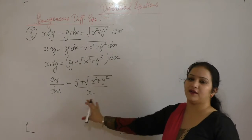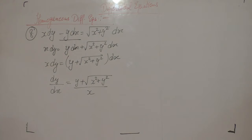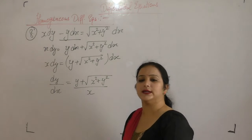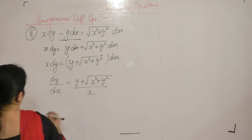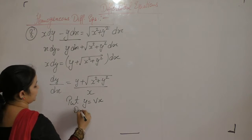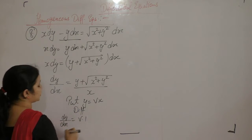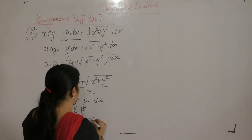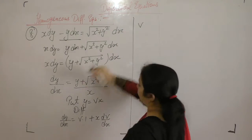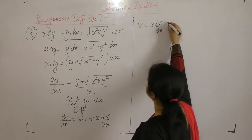We check the degree of the equation — it is degree 1 in both numerator and denominator, so this is a homogeneous differential equation. Now put y equal to vx. After differentiating with respect to x, dy upon dx equals v plus x dv upon dx.